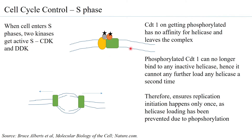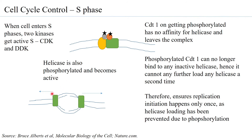S-CDK and DDK also phosphorylate the helicase itself. On phosphorylation, the helicase dimer separates into monomers — one moves in one direction and the other moves in the opposite direction, opening the DNA in both directions. This gives you an open DNA with two templates, to which DNA polymerase comes and binds and synthesizes the new DNA.